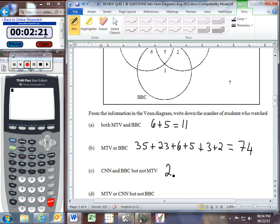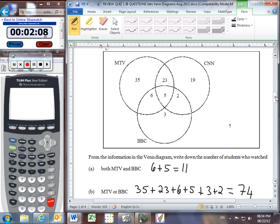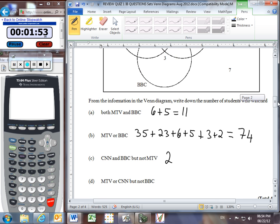And lastly, MTV or CNN, so we're going to be including everything from both of those circles, but not BBC. So they cannot be in the BBC circle. So we'll take everybody inside MTV or CNN, but we must exclude the ones that are in BBC. They cannot be in there. So we've got 35 plus 23 plus 19. Those are the only three regions that are in MTV or CNN, but all of them are not in BBC. And that gives us a total of 77.